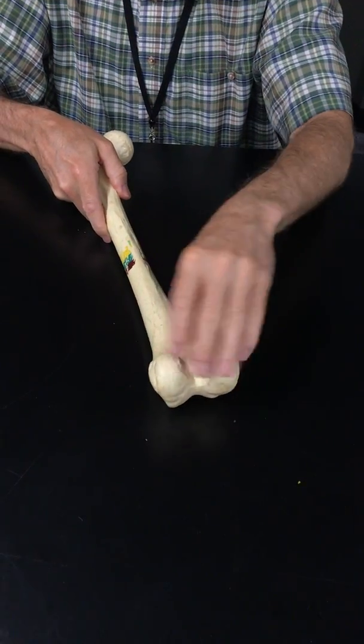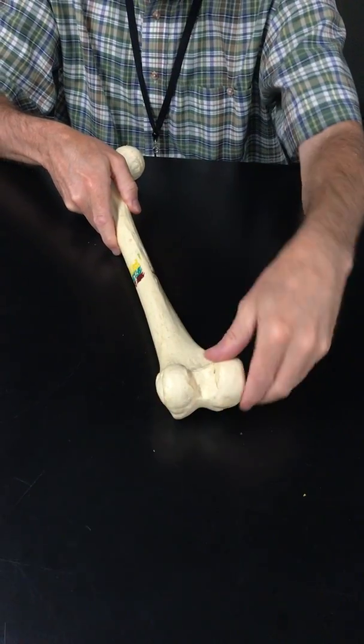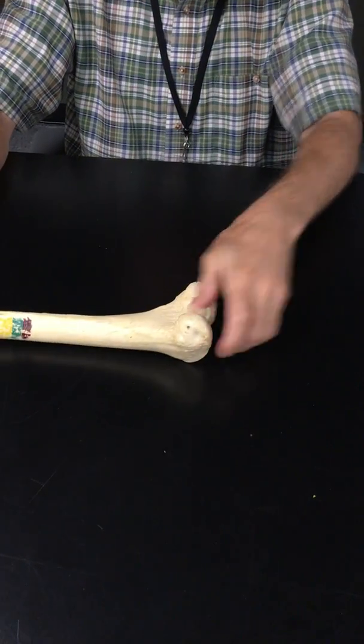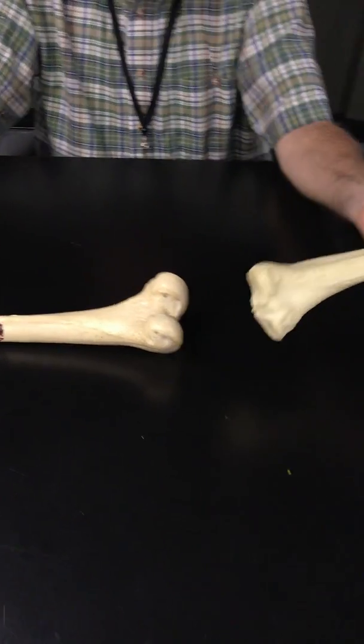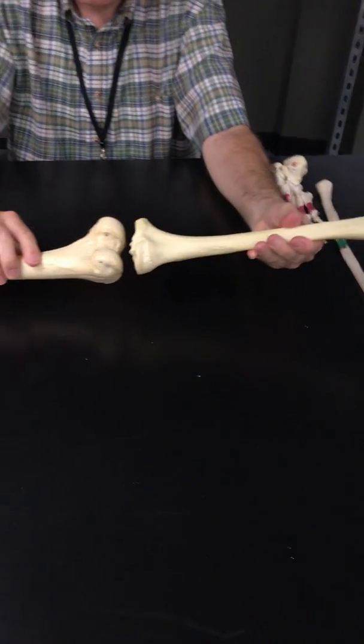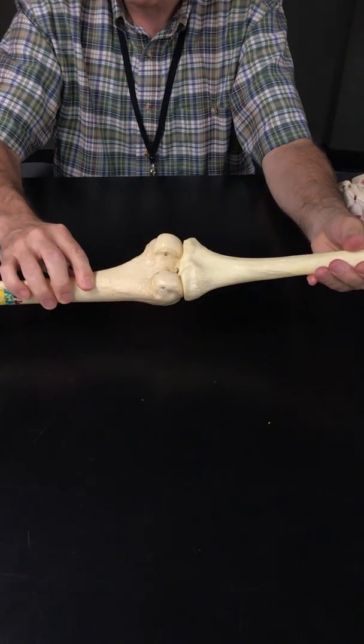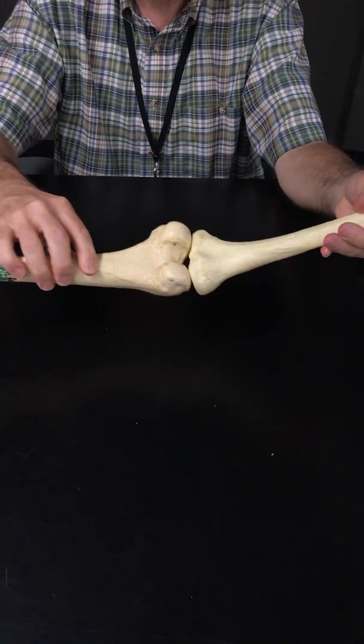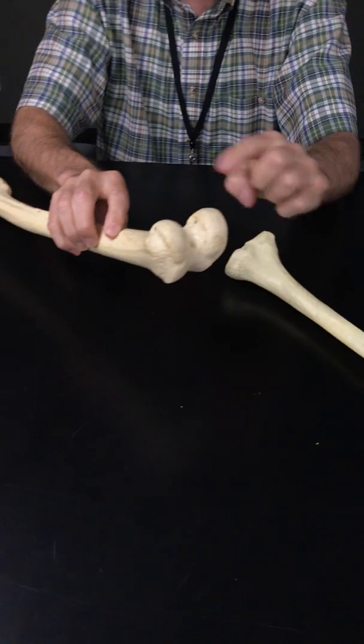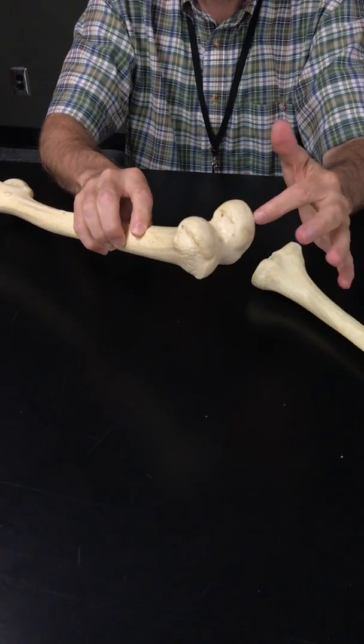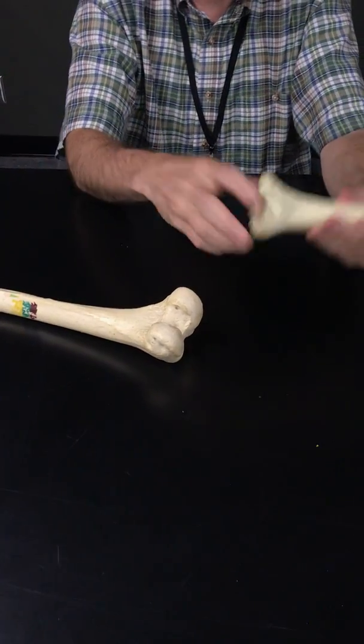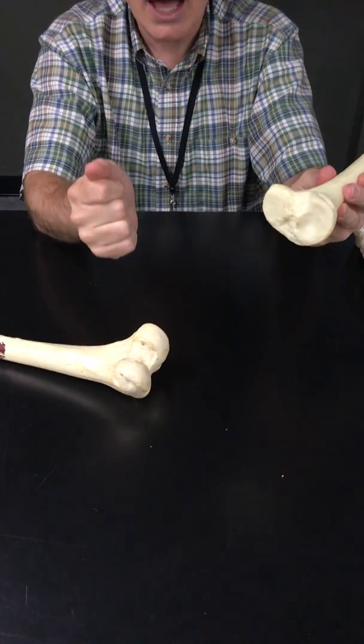And then we come to where the knee, the joint surfaces for the knee will be. So if we bring out the tibia, let me show you. Voila. There's your knee joint. There are two joint surfaces, condyles, that articulate with two joint surfaces, condyles.